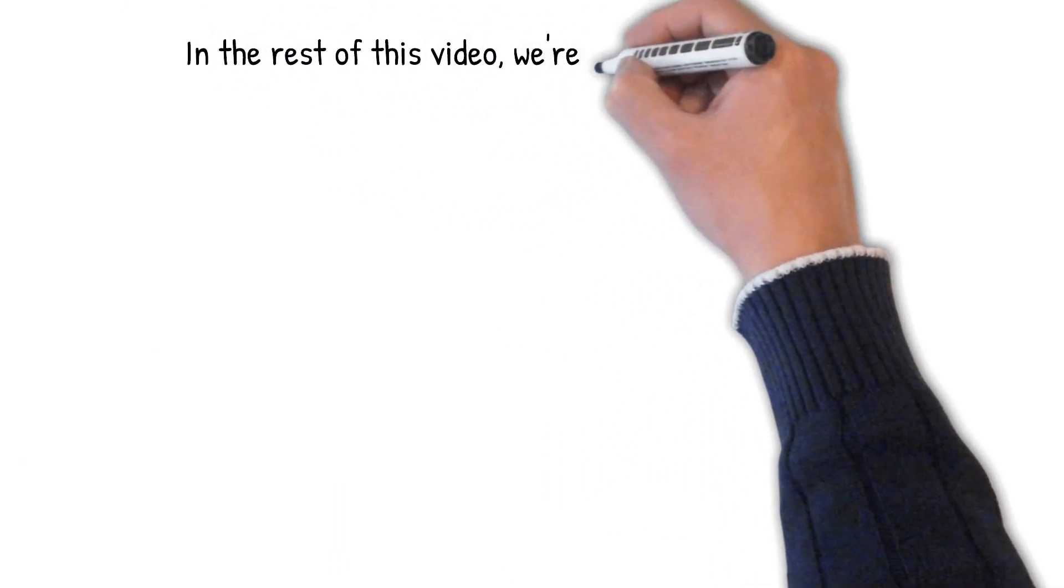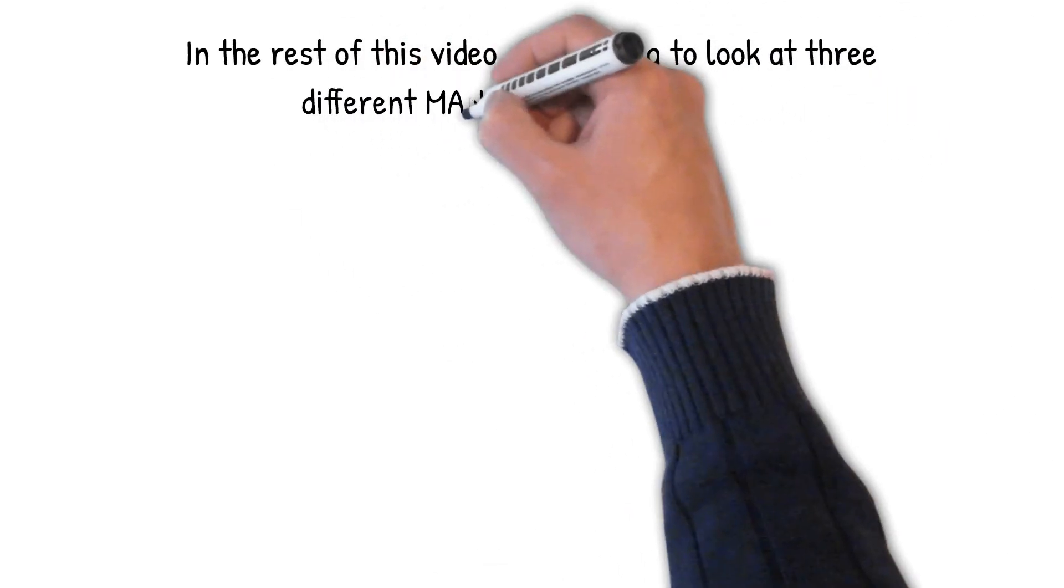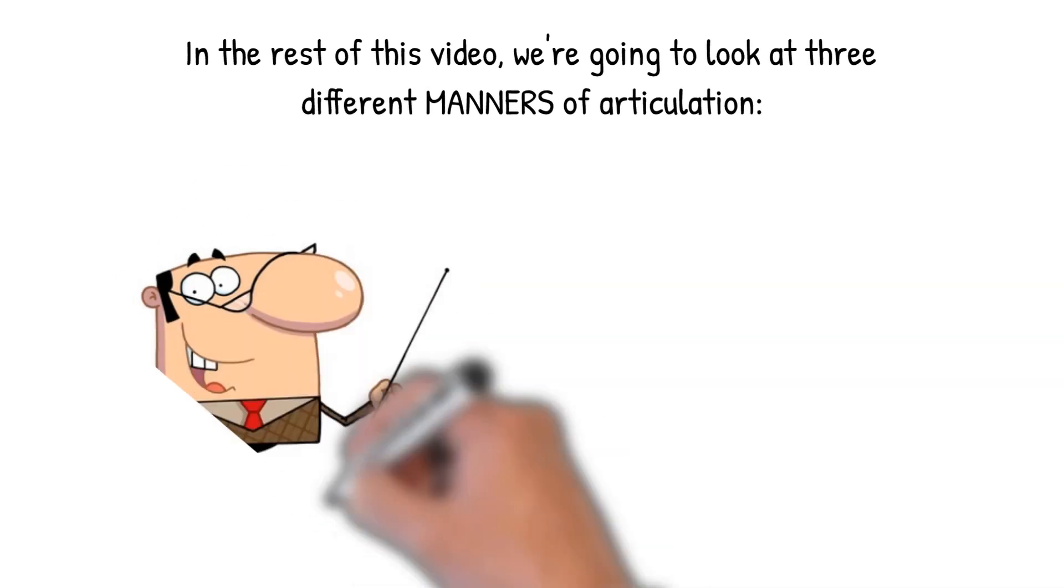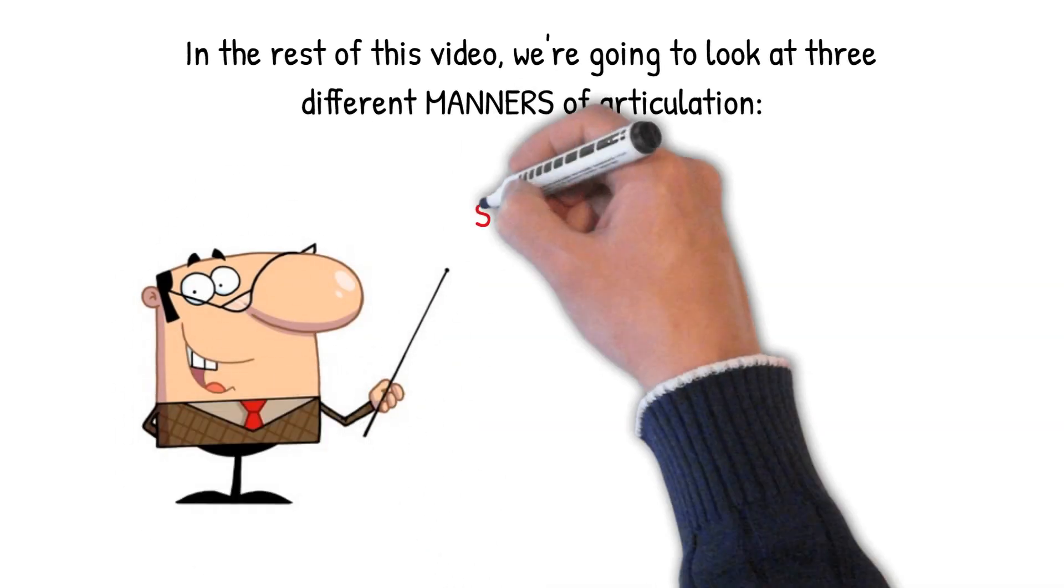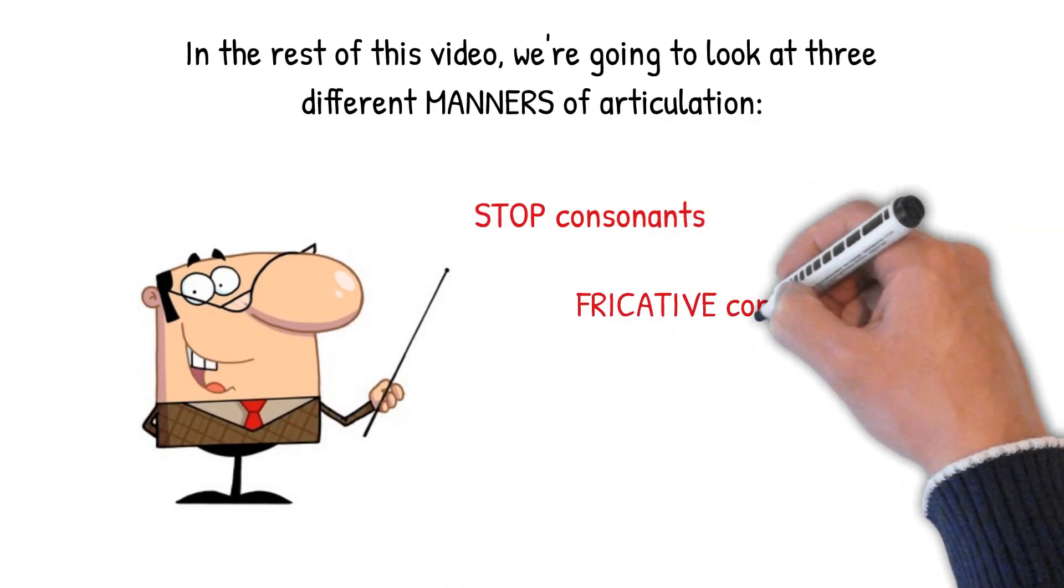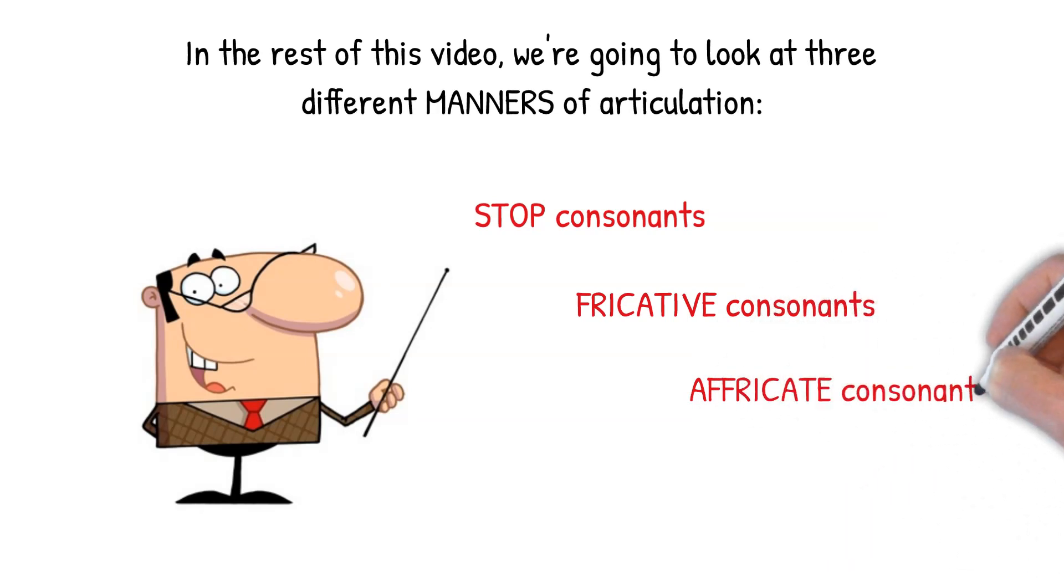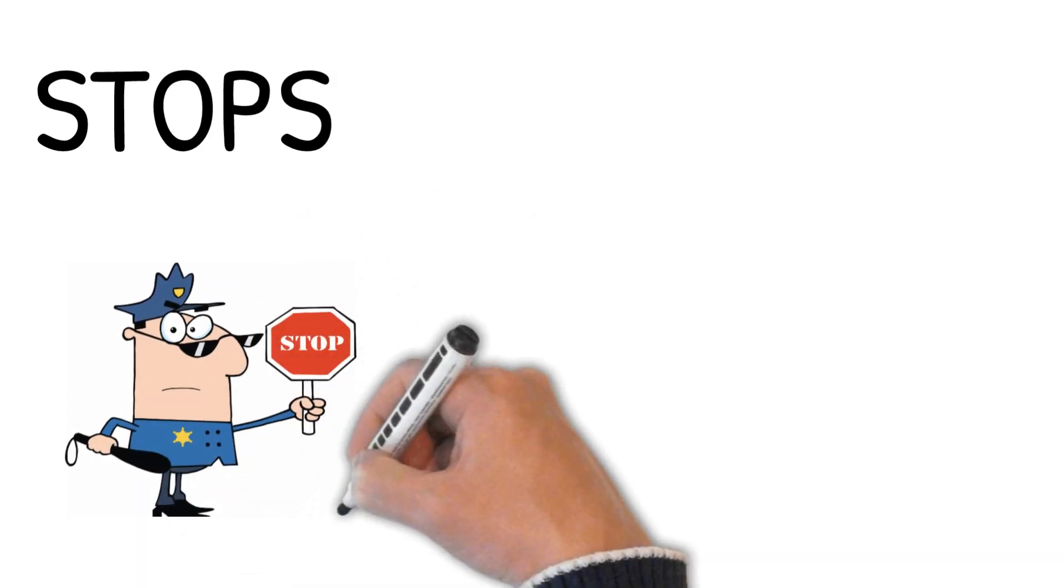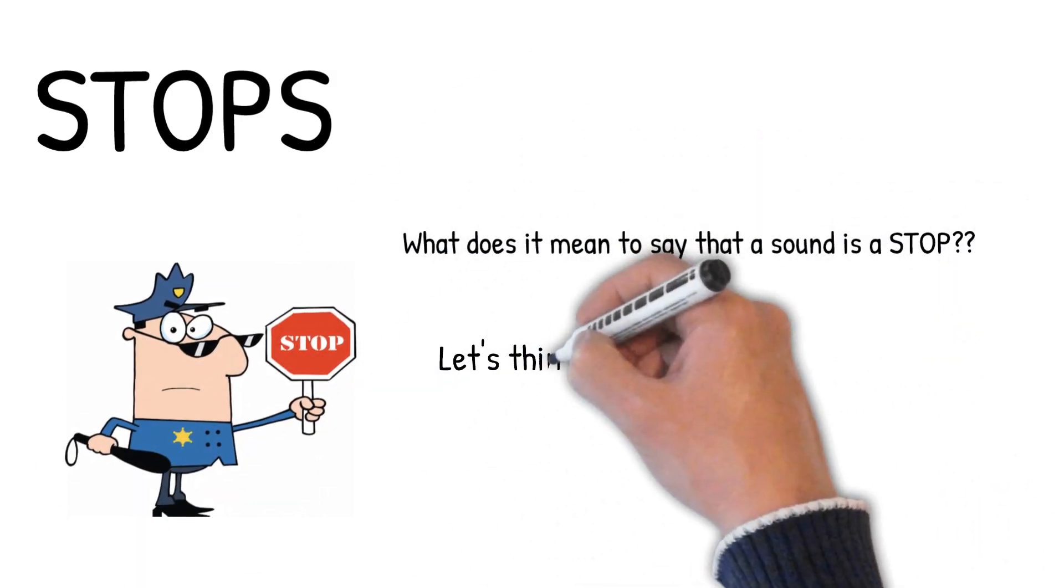In the rest of this video, we're going to focus on three different manners of articulation and consonant sounds. In particular, we're going to look at stop consonants, fricative consonants, and affricate consonants. So let's get started with stops. What exactly do we mean when we say that a sound is a stop?